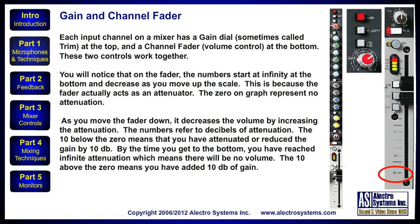The zero on the scale represents no attenuation. As you move the fader down, it decreases the volume by increasing the attenuation. The numbers refer to decibels of attenuation — the 10 below the zero means that you have attenuated or reduced the gain by 10 decibels. By the time you get to the bottom, you have reached infinite attenuation, which means there will be no volume.